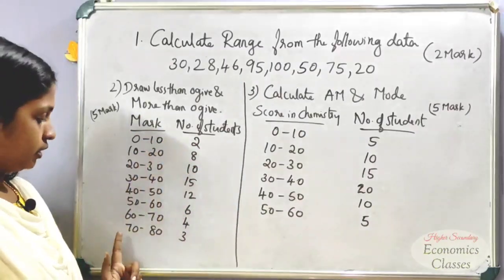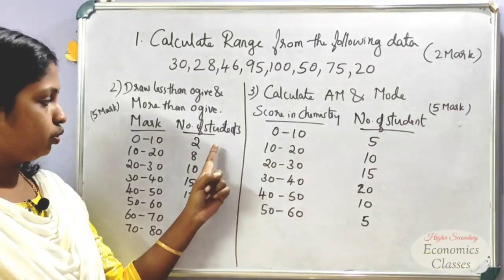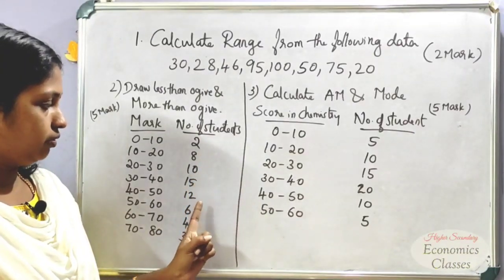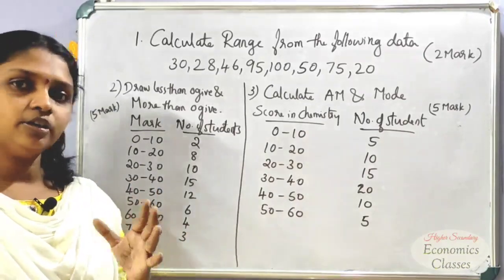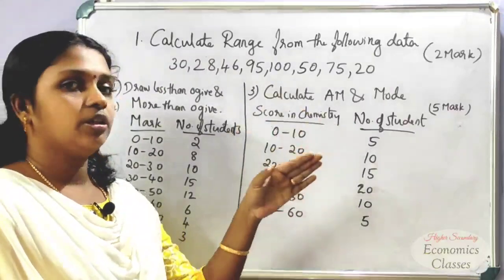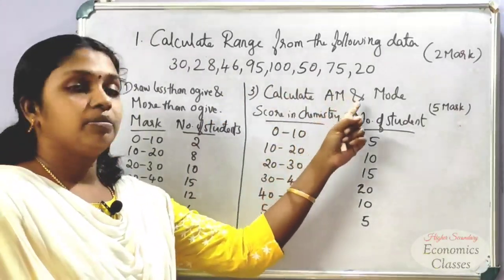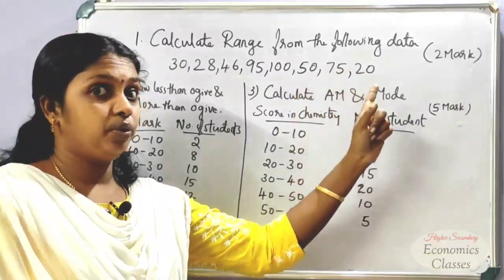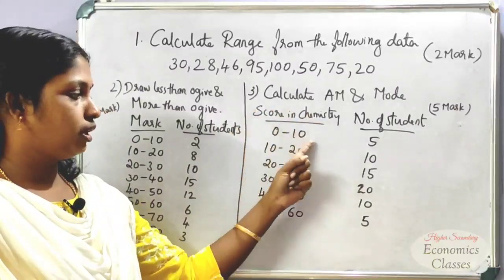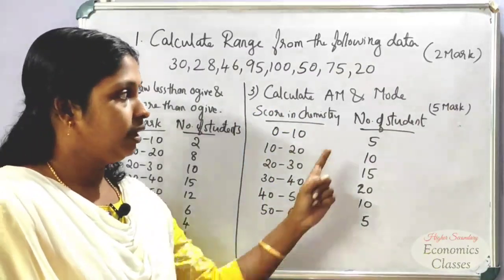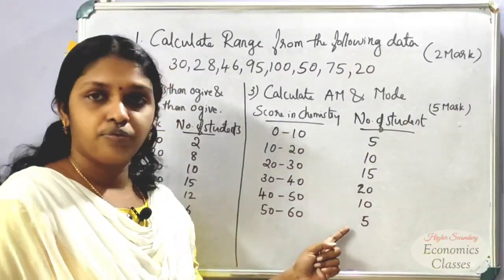The classes are 0 to 10 up to 70 to 80. The number of students is 2, 8, 10, 15, 12, 6, 4, 3. Another question: Calculate arithmetic mean and mode. The score in chemistry has classes 0 to 10 up to 50 to 60, with students: 5, 10, 15, 20, 10, 5.